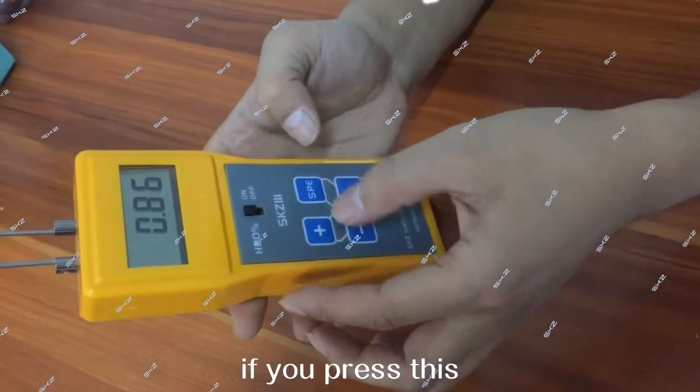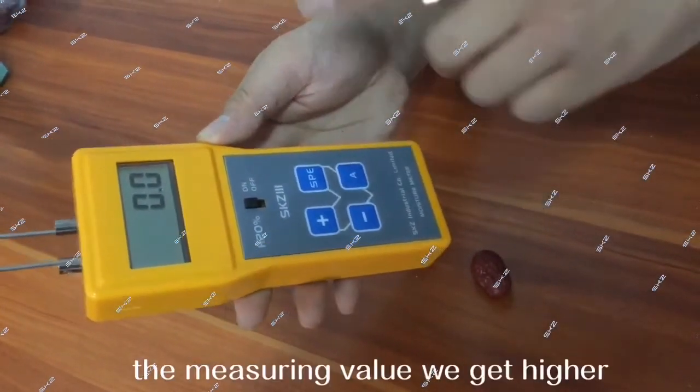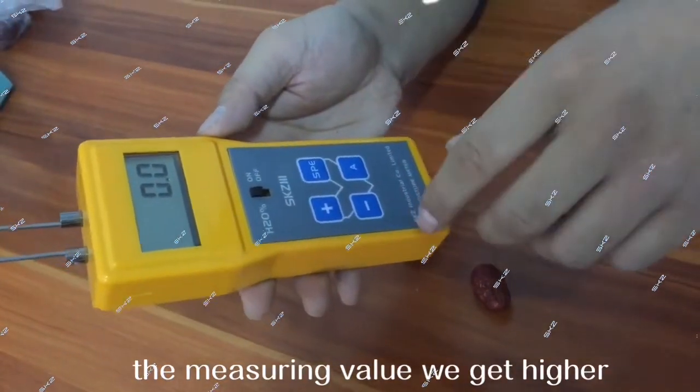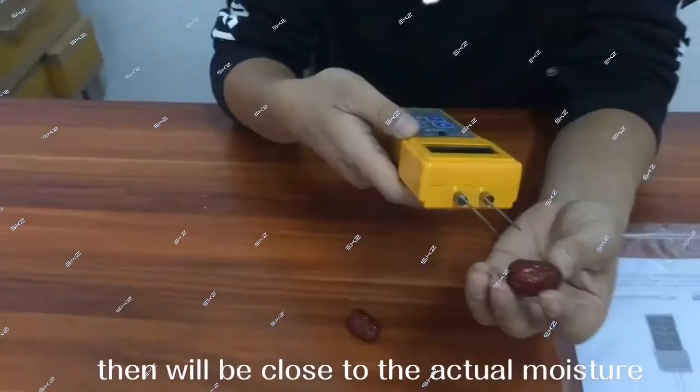If you press this, maybe, then press A, it will get back. The measuring value will get higher. Then it will close the seams with the actual moisture.